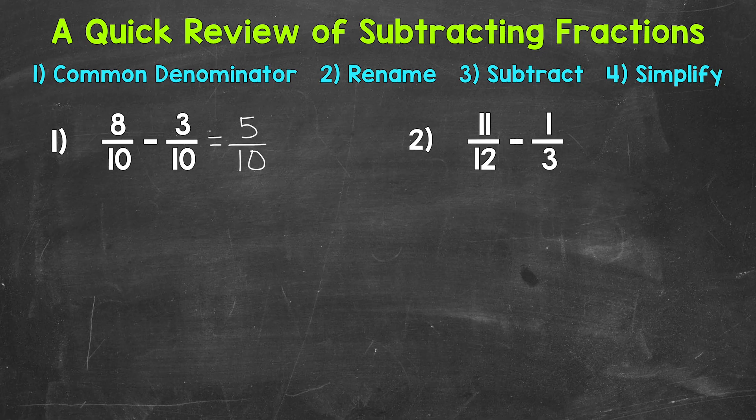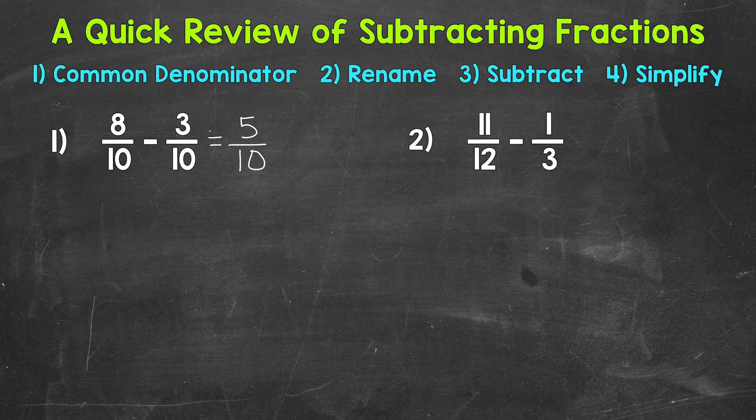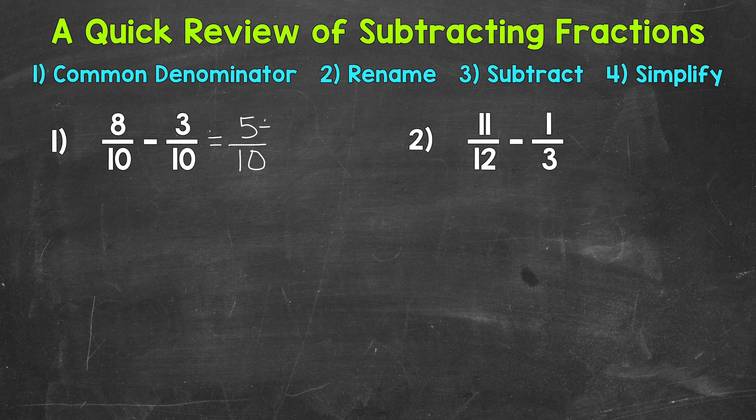But we can simplify here. We have a common factor other than 1 between 5 and 10 that we can divide both of those by. We have a greatest common factor of 5, so let's divide both of these by 5.